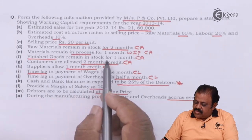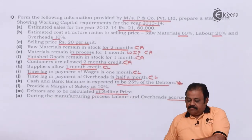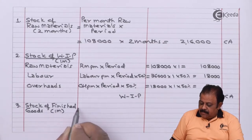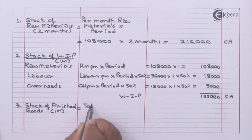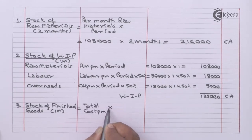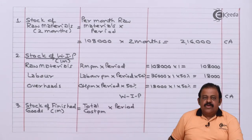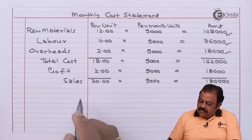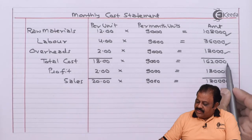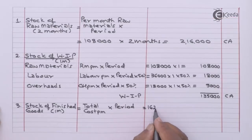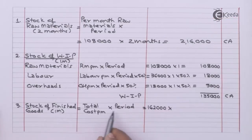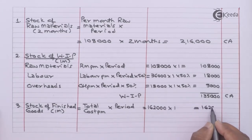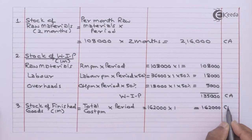Finished goods remain in stock for one month. Stock of finished goods = total cost per month × period = rupees 1,62,000 × 1 month = rupees 1,62,000. This is a current asset.